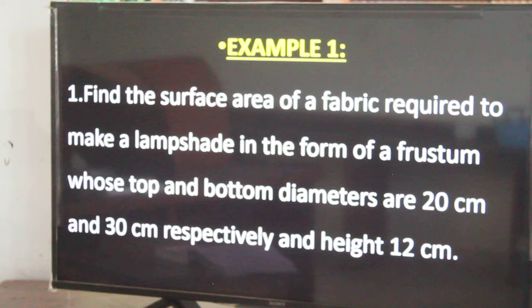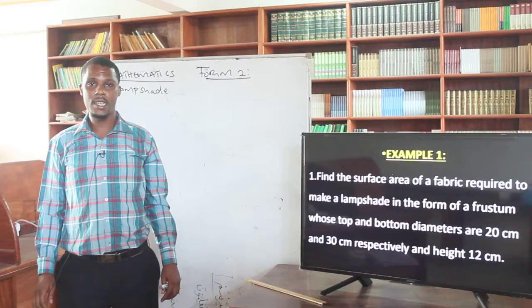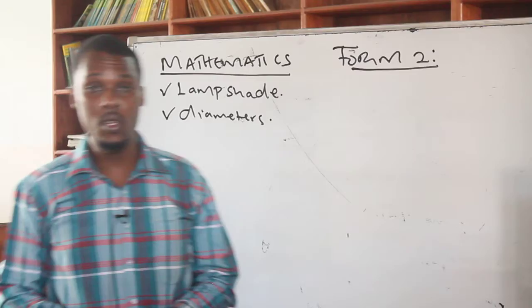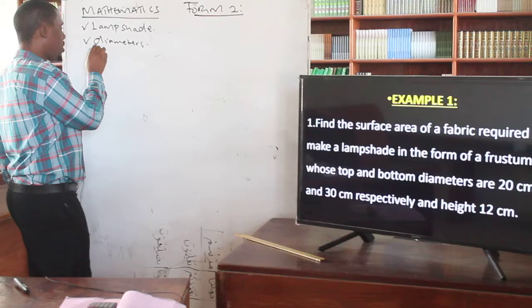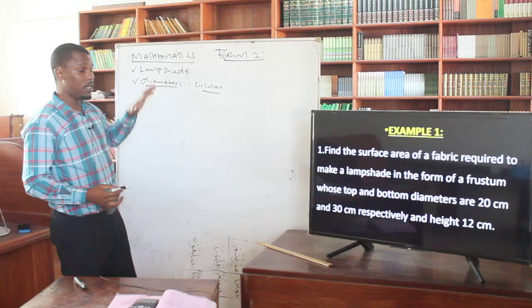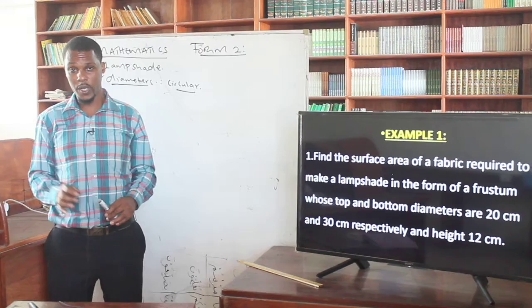In example number one, you are told to find the surface area of the fabric material required to make a lampshade. The lampshade is in the form of a frustum, whose top and bottom parts have given diameters. One key point: no one has told you whether it is from the pyramid or the cone, but the hint is in the word 'diameters' — it tells you the bases are circular, so this will be a frustum from the cone. You should be able to identify this from the hint in your exam.